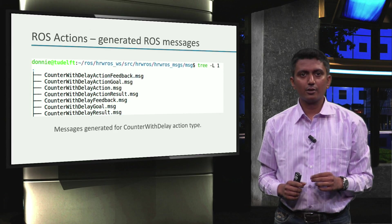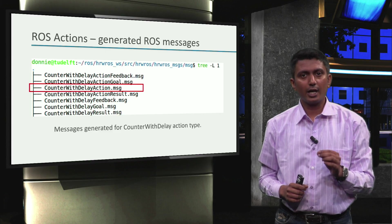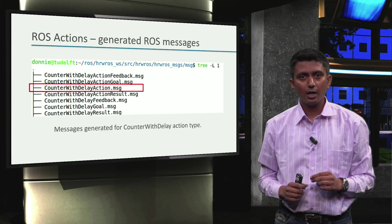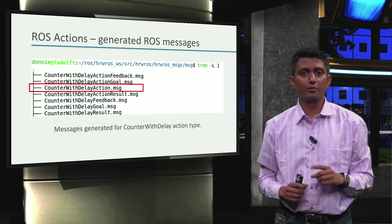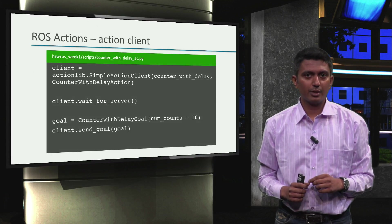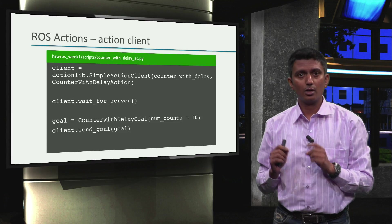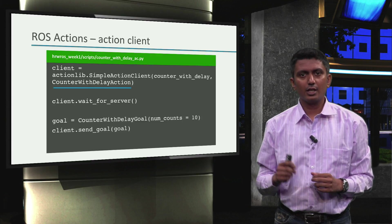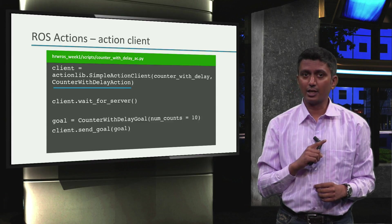Now let's focus back on the message files that did have the word 'action' in them. Particularly, the counter_with_delay action dot msg, which is an aggregation of the 3 other messages with the word 'action' in them. This message type is also the type we will use in the code illustration as the type of our action server and action client. For example, let's take a look at this code snippet of an action client. We learned in the previous video that the action client sends a goal to an action server where the goal will be processed. We can notice here that the action client is of type counter_with_delay_action.